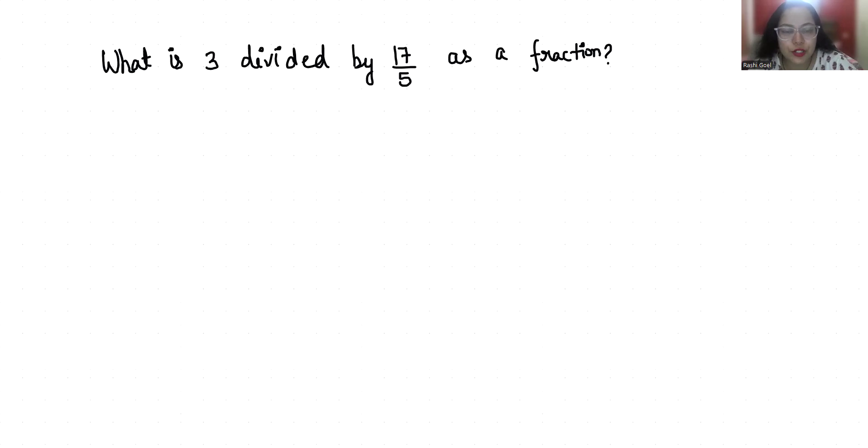Let's start with today's video solution. Anything in terms of P by Q is a fraction form where P is numerator and Q is denominator. As we can already see here, 17 by 5 is in fraction form.